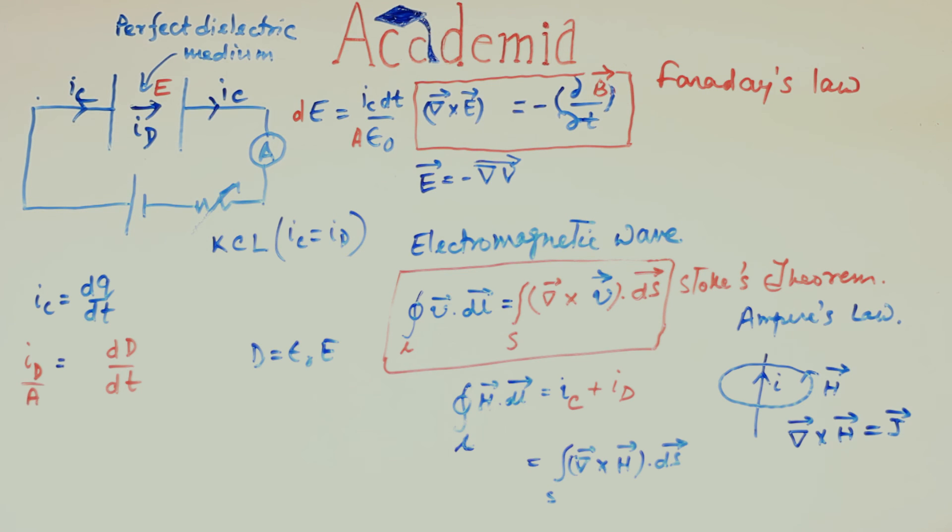So, ID by A is equal to JD, the displacement current density. Since D is both a function of space and time, so this derivative of D with respect to time must be partial derivative. So, JD is equal to del D del T.